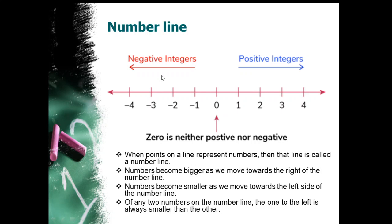Of any two numbers on the number line, the number to the left is always smaller. For example, taking minus 1 and plus 1 — minus 1 is smaller. Or take minus 3 and 1 — minus 3 is smaller. Keep in mind: any number on the number line towards the left is always smaller than the number on the right side. If I take minus 4 and 0, which is smaller? Minus 4 is smaller, as per the rule.